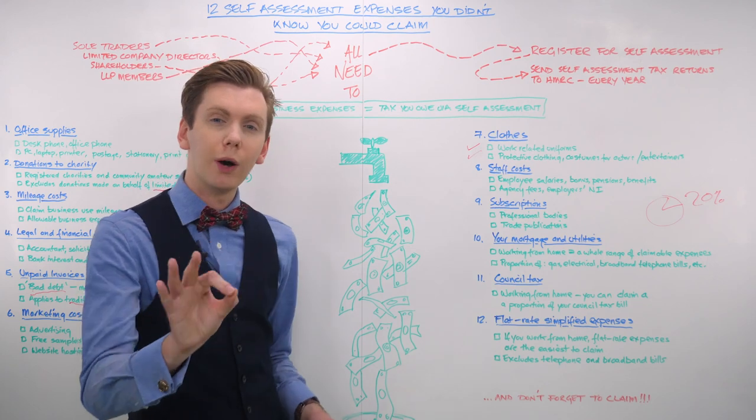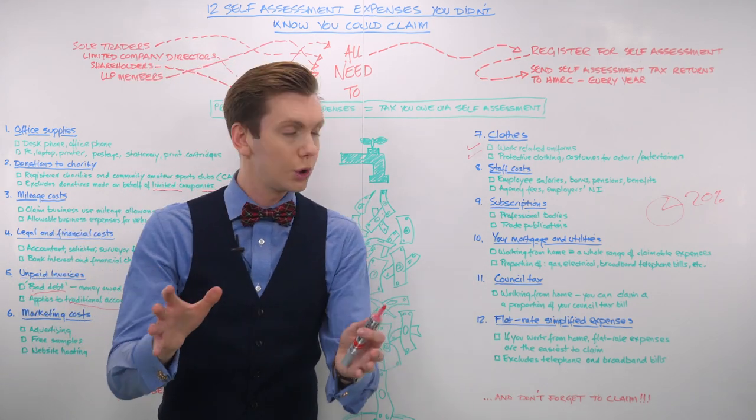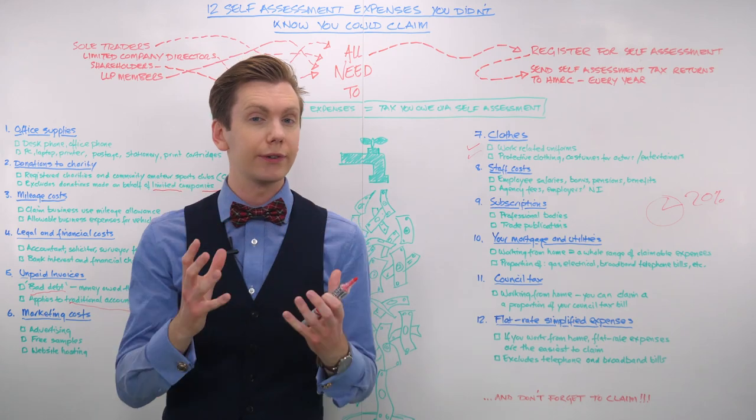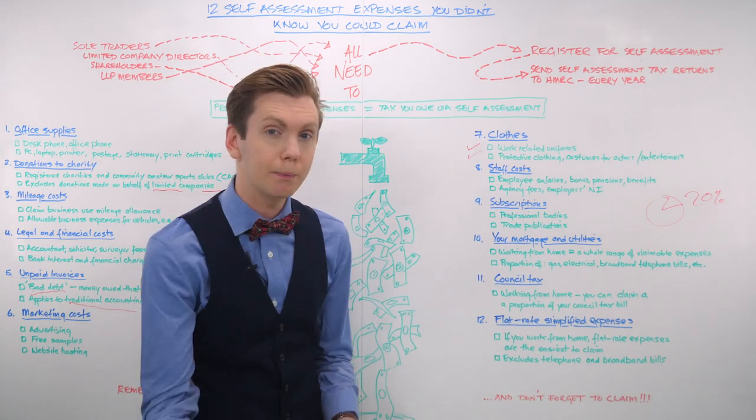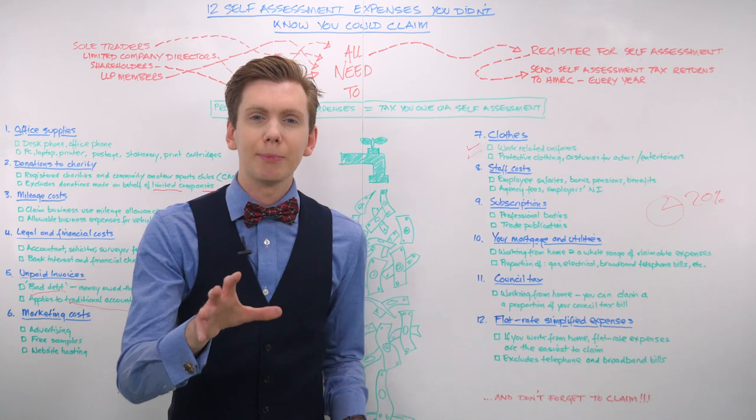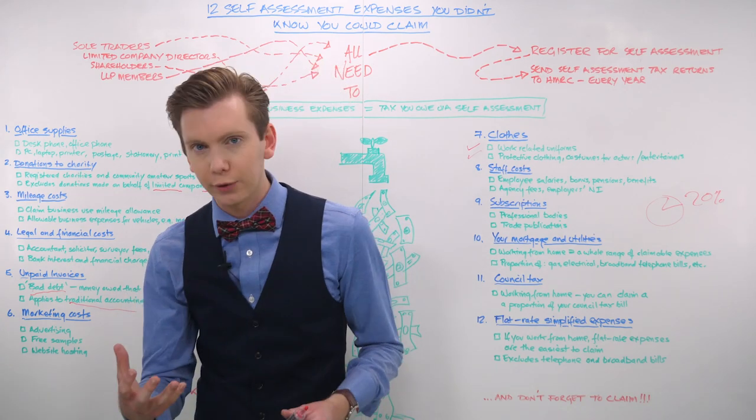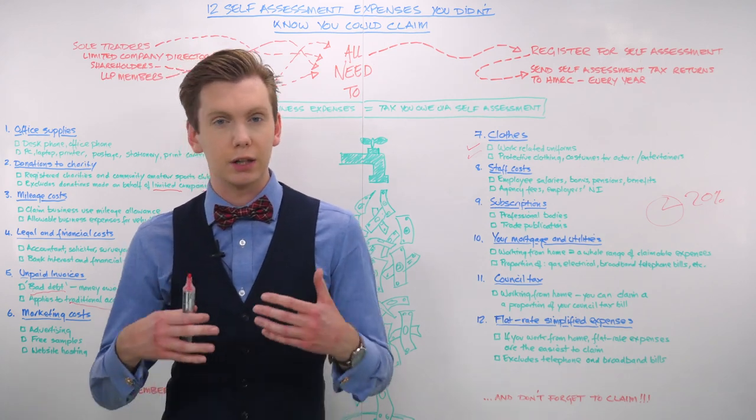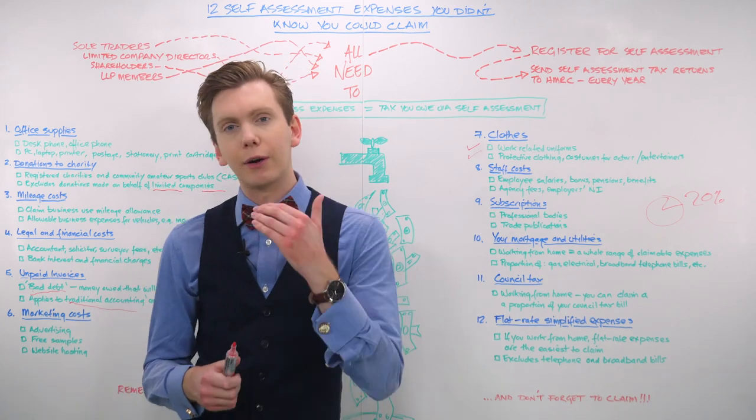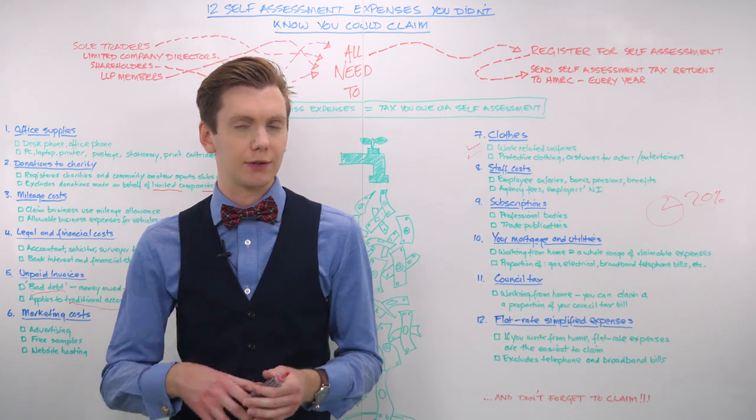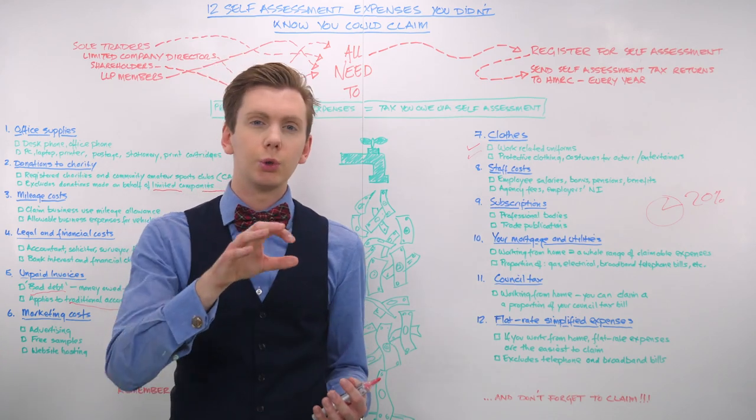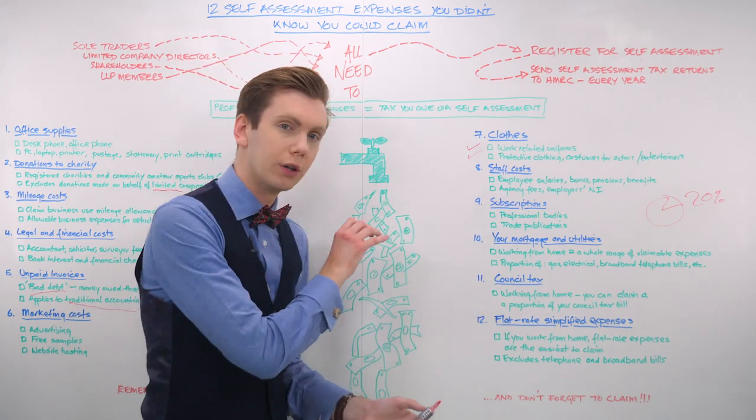And finally, the 12th self-assessment expense that you probably didn't know that you could claim is the flat rate simplified expenses. Now, with all the self-assessment expenses that you should be claiming on your annual tax return, simplified expenses is the easiest. The clues in the name. HMRC allows for a no-quibble flat rate deduction for sole traders and partners in a business partnership who work from home for at least 25 hours per month. The flat rate will depend itself on the amount of actual hours of business use per month.